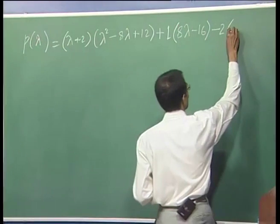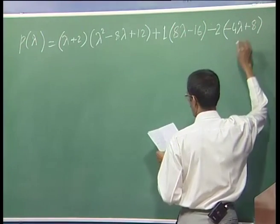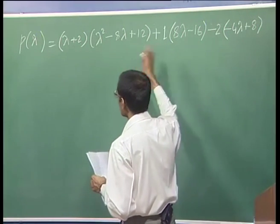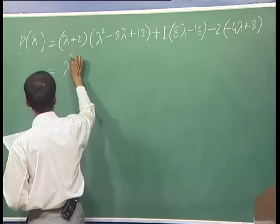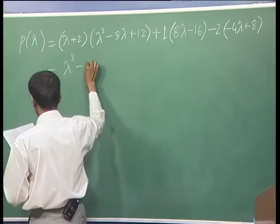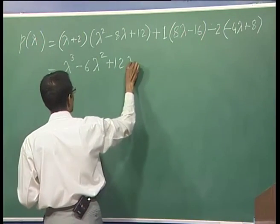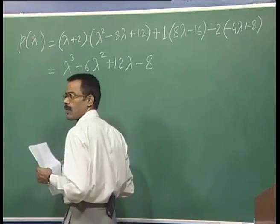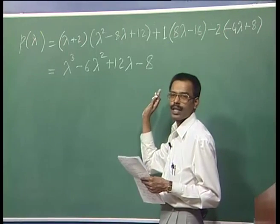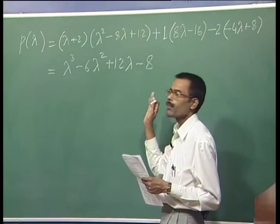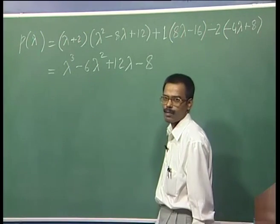As you simplify this, you will get the characteristic polynomial. This particular polynomial is very easy to factorize because you can see that it is the exact cube of lambda minus 2.